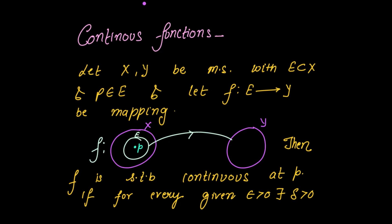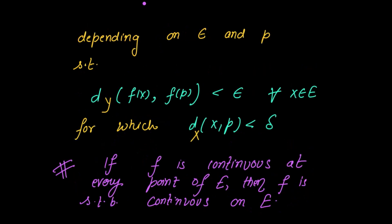Now the definition for continuous functions: let X and Y be metric spaces with E a subset of X, p belonging to E, and f a mapping from E to Y. Then f is said to be continuous at p if for every given epsilon positive, there exists delta positive depending upon epsilon and p, such that the metric distance of f(x) and f(p) in Y is less than epsilon for all x in E for which the metric distance of x and p in X is strictly less than delta.